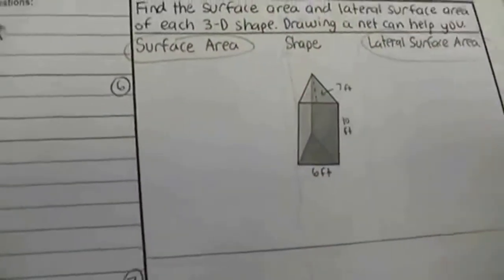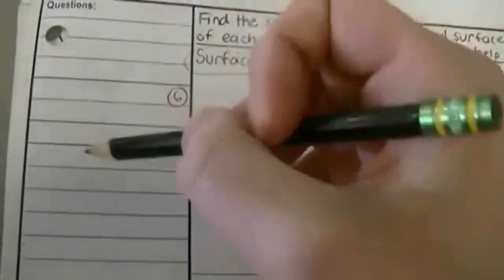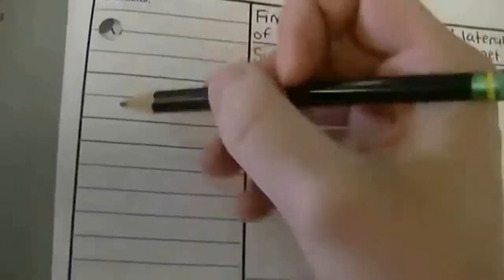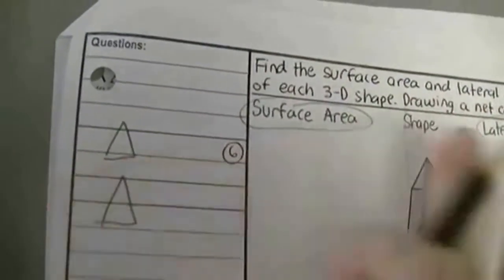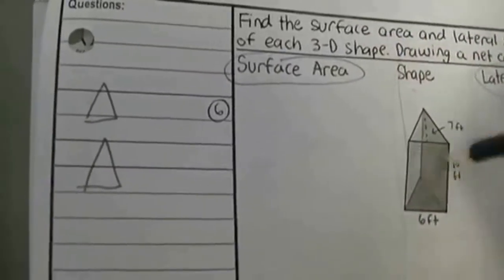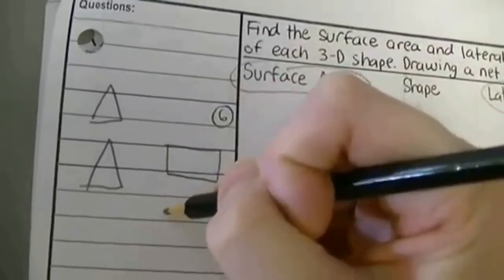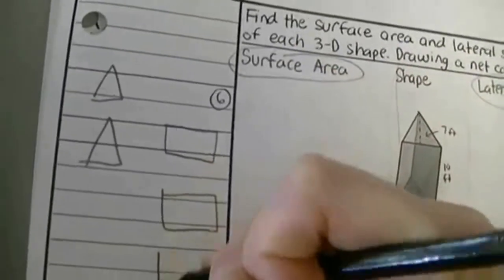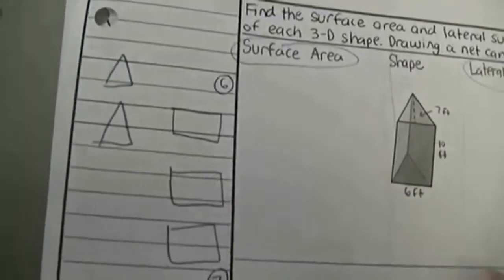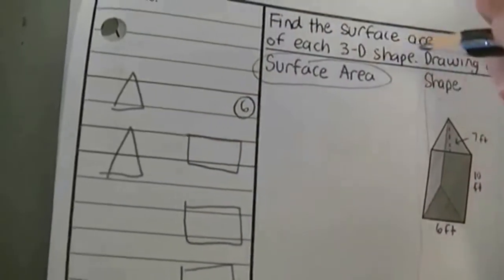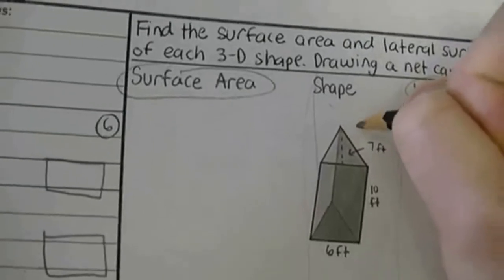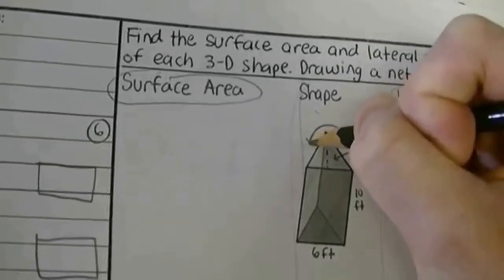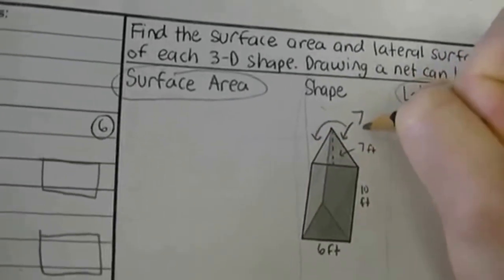I'm going to draw a kind of a disconnected net — I'll just draw the faces separately. There are going to be two triangles and three rectangles. For the triangle, there's something I forgot to give you: the slant height on both sides is 7.62. You'll need that for the rectangles.